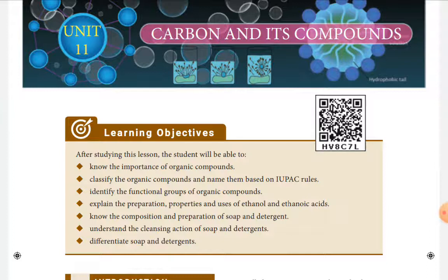We know the symbol of carbon is C, atomic number 6, mass number 12. The position of carbon in the periodic table is 14th group, second period. What is the electronic configuration? Atomic number 6, so there are 6 protons and 6 electrons, giving the configuration 2, 4.